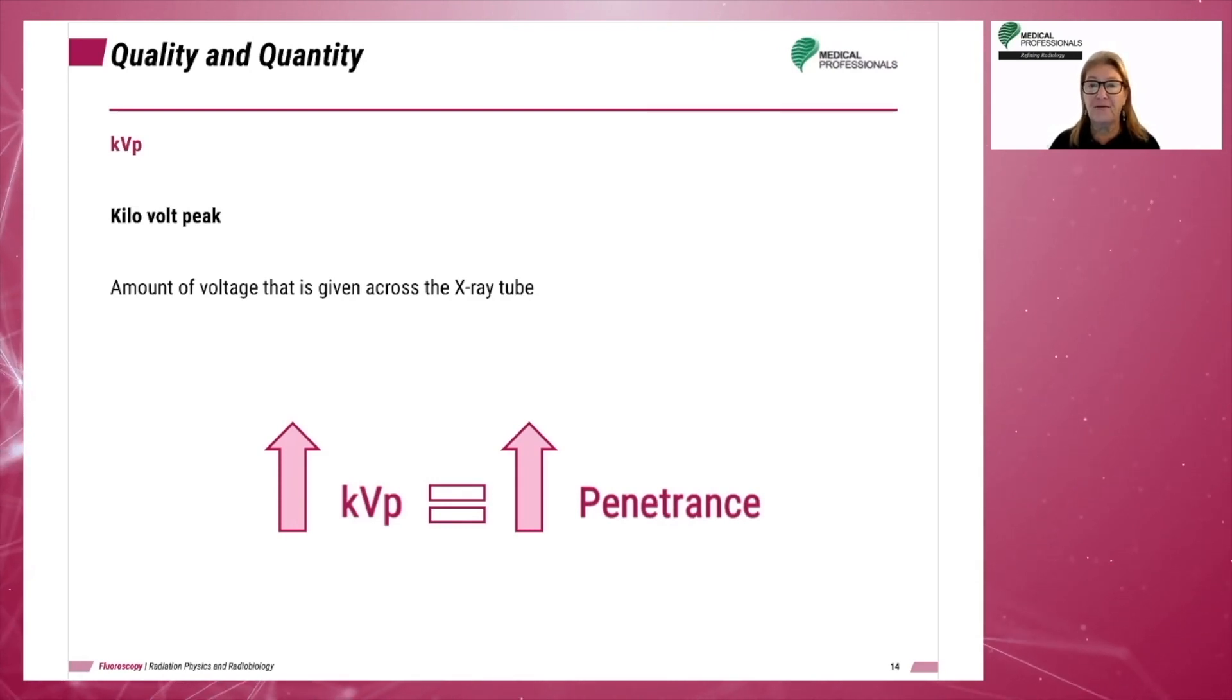The thickness of the target object, the density of the target tissue or material, the desired contrast on the resulting image. The thicker the object, the higher the quality, energy, and KVP needed. The opposite would also be true. The more dense the material being penetrated, the higher the quality, energy, and KVP needed. The opposite would also be true.